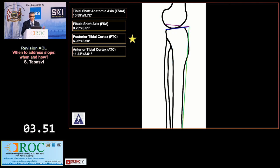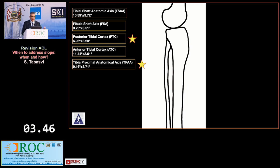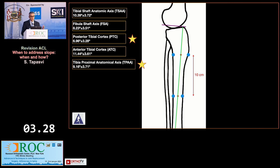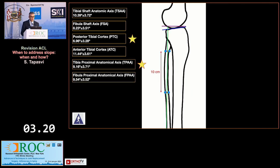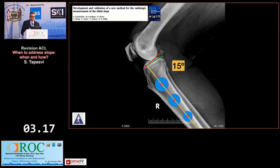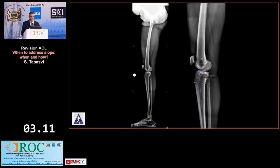The anterior tibial cortex method is not very consistent. The most commonly used and validated method is the tibial proximal anatomic axis method: take two points separated by 10 centimeters on the anterior and posterior cortices, take their midpoints, join them, draw a perpendicular and a line along the slope — normal values are about 9 degrees. This is predominantly what we use on short leg films and is well validated in clinical practice.